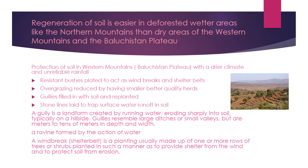We have discussed soil conservation measures being practiced in northern mountains of Pakistan. Now we'll see the protection of soil in western mountains as well as the Balochistan plateau, which have dry climatic conditions and unreliable rainfall. The first step that can be taken is planting of resistant bushes. Resistant bushes are planted to act as windbreaks and shelter belts. Shelter belts are lines of trees or shrubs planted to protect an area, especially a field of crops, from severe climatic conditions.